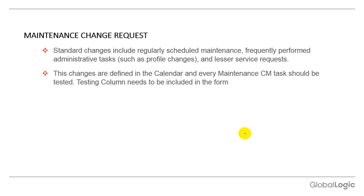Maintenance change request: we perform maintenance on a regular basis — for example, monthly patch management and firmware upgrades as and when received from vendors — to ensure proper working of the system and avoid breakdowns. Standard changes include regular scheduled maintenance and frequently performed administrative tasks such as profile changes or service requests. These changes are defined in the calendar and every maintenance change management task should be tested.